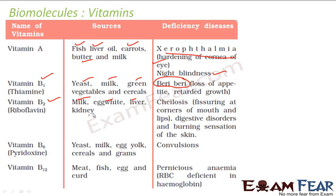Vitamin B2 is found in milk, egg white, liver and kidney. If you don't take this, you will get cheilosis - fissuring of the corner of mouth and digestive disorders.